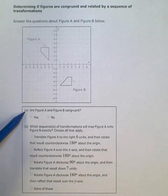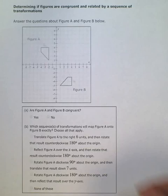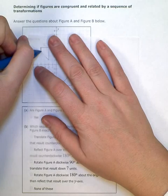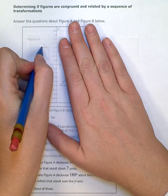The first question is, are figure A and B congruent? Which means, are they the same size, same shape, even if they've been moved around the plane a little bit, or turned, or flipped?